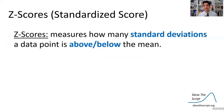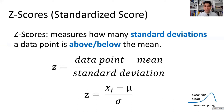Now let's look at standardized scores, or z-scores. Z-scores measure how many standard deviations a data point is above or below the mean. The formula is: take the data point, subtract the mean, and divide by the standard deviation.